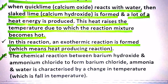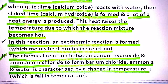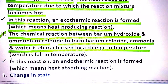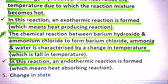A second example is the chemical reaction between barium hydroxide and ammonium chloride. This forms barium chloride, ammonia, and water, and is characterized by a fall in temperature. In this type of reaction, an endothermic reaction is formed, which means a heat-absorbing reaction.